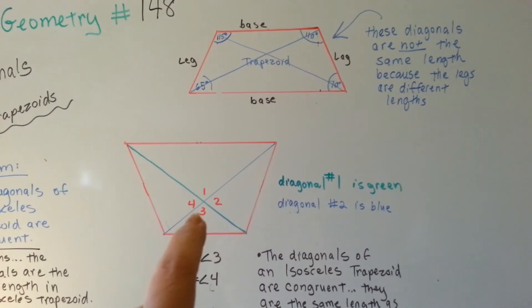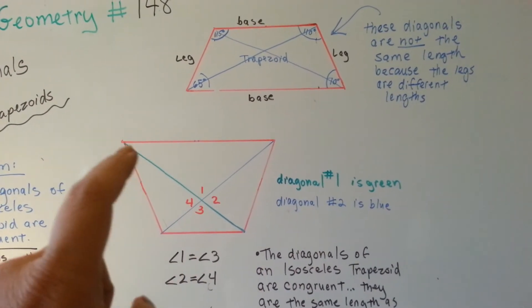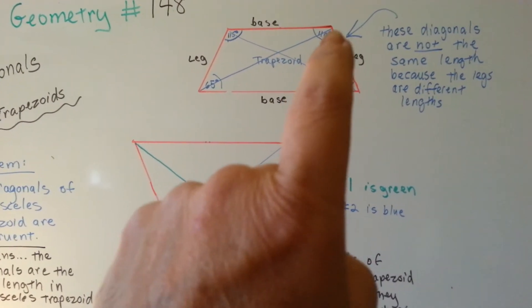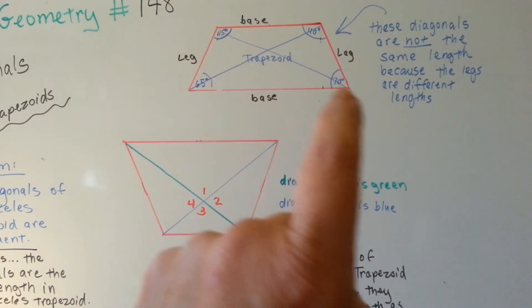This one is an isosceles trapezoid because this leg is the same length as this leg. The diagonals are drawn across from one corner to the other.